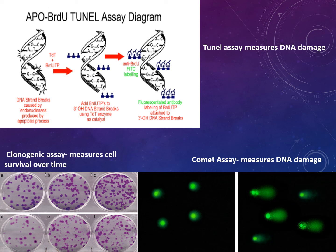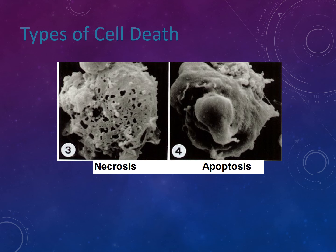You also have the comet assay, which measures DNA damage. There is also the clonogenic assay, which measures survival over time, and the TUNEL assay, which measures DNA damage.